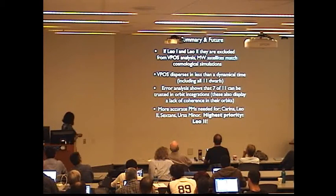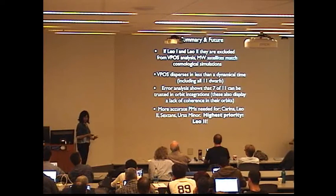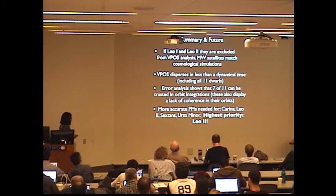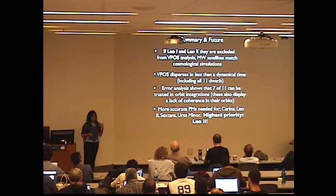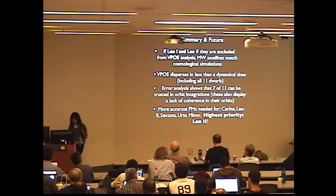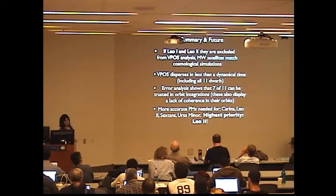So, in closing, I just want to emphasize that what we really need now are more accurate proper motions for these four satellites, Carina, LEO-2, Sextans, and Ursa Minor. Given that LEO-2 significantly influences the fit to the planar structure, that should be the highest priority. Thanks a lot for your attention.